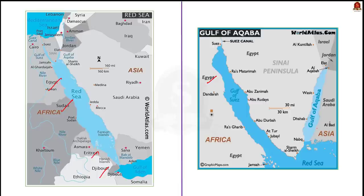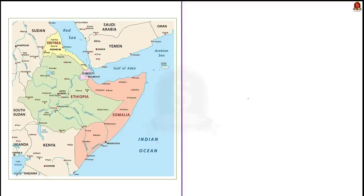Israel has a Mediterranean coast and is connected to the Red Sea via the Gulf of Aqaba. You can also notice the Gulf of Suez on this map — it is bordered only by Egypt. We will also see the Gulf of Aden, which is bordered by Yemen, Somalia, and Djibouti. So the country of Djibouti has both a Red Sea coast and a Gulf of Aden coast.